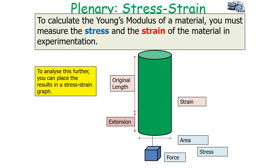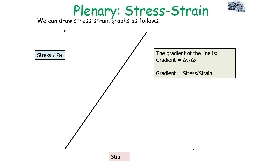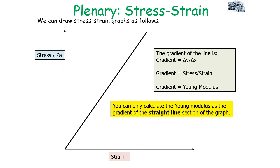To calculate the Young Modulus experimentally, you measure both the stress and the strain of the material, then place the results in a stress-strain graph with stress on the y-axis and strain on the x-axis. The gradient, delta y over delta x, or stress over strain, equals the Young Modulus. You can only calculate the Young Modulus from the straight-line section of the graph — when the material exhibits elastic behaviour below its limit of proportionality and follows Hooke's law. Stiffer materials have a steeper gradient.